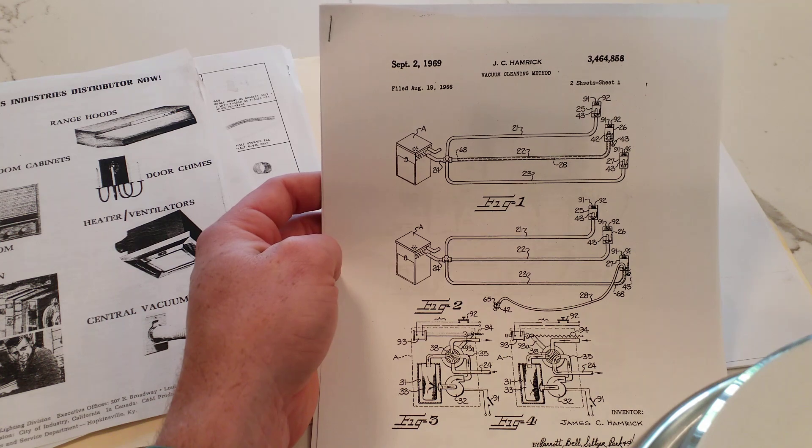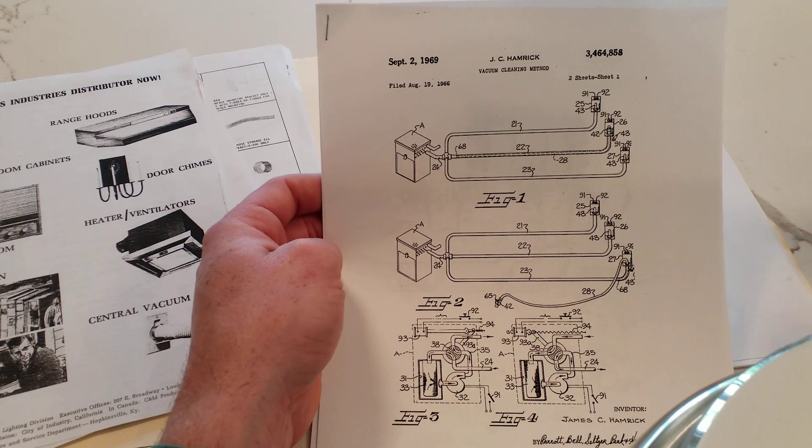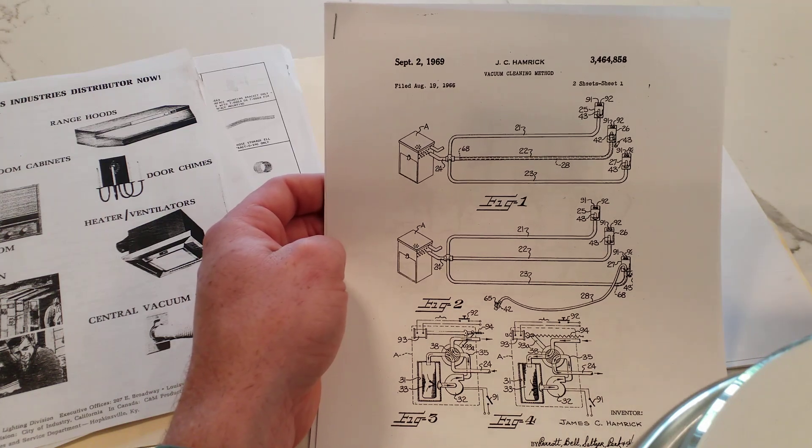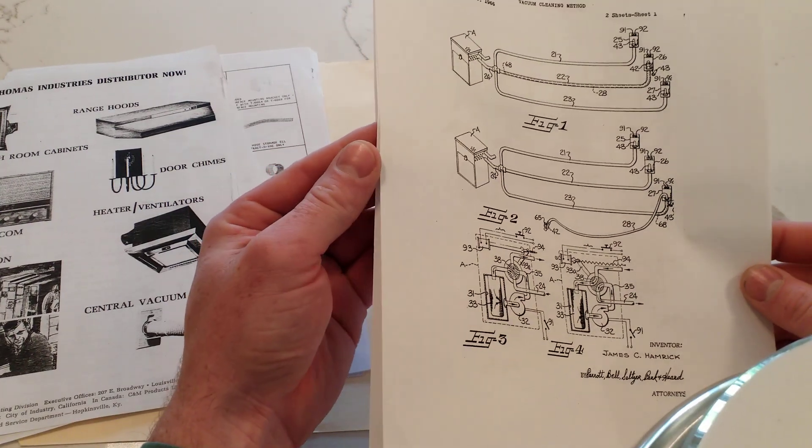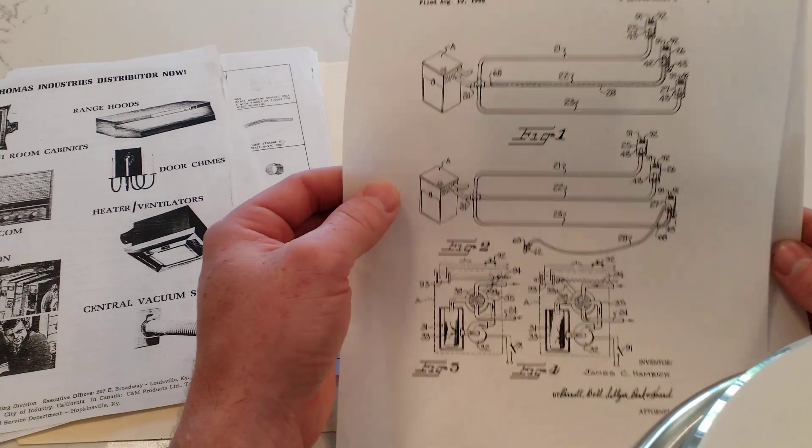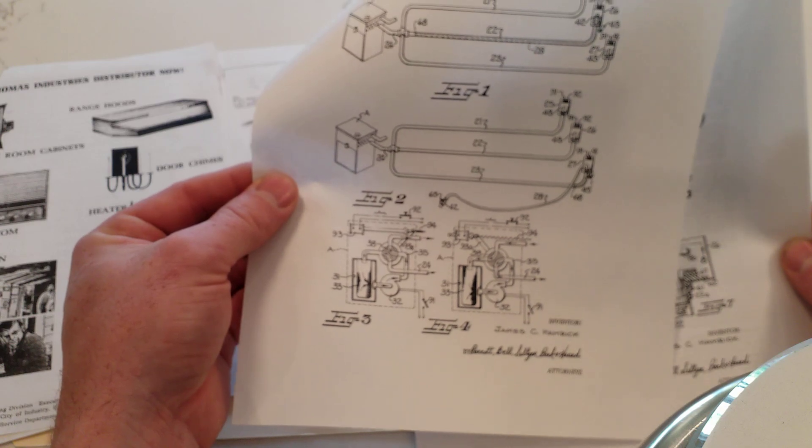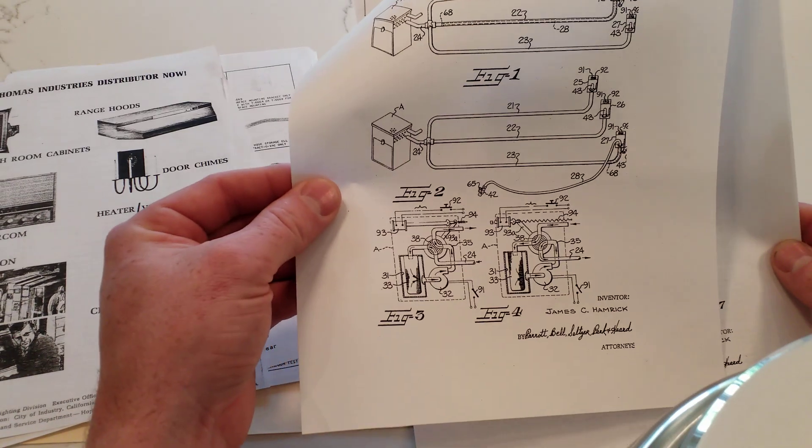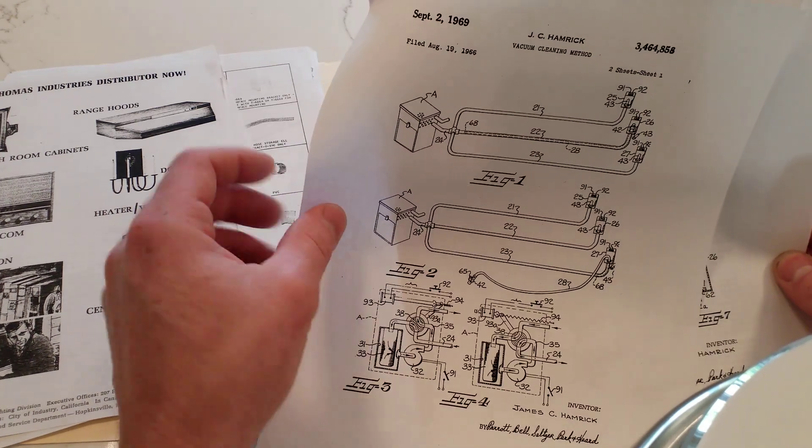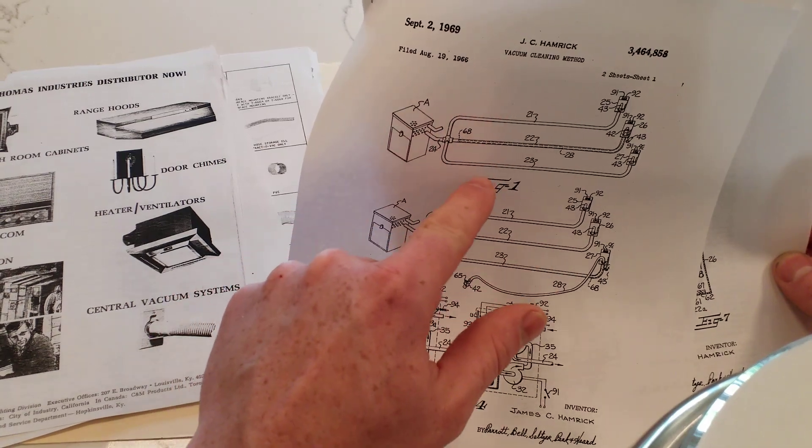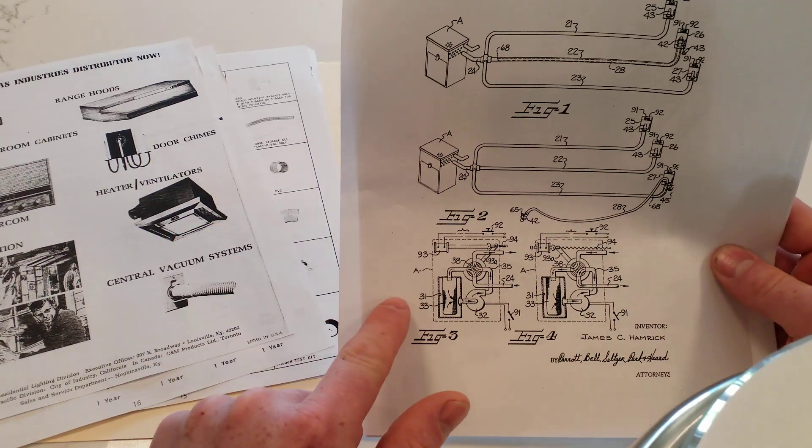So here we go with the patents. Interesting little element of patent ease. This patent is called vacuum cleaning method. Now to me a method is a way you do something, not a product. And speaking in patent ease is kind of his first language, and then he learned English later on. But you can see this power unit installed in conjunction with several different retractable inlets, each with their own hose.